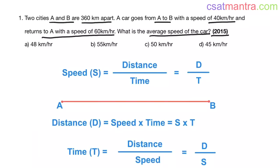We know speed equals distance by time. Distance d traveled in time t. From this we can write distance d equals speed into time, s into t, and time t equals distance by speed, d by s.